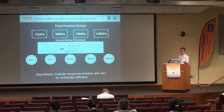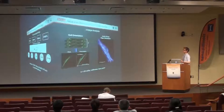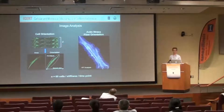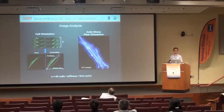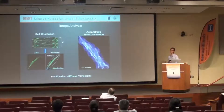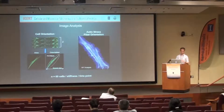The hypothesis is that cells are going to respond differently at different time points on different stiffnesses. For analysis, I fixed the cells and stained them with phalloidin to visualize their actin stress fibers, then looked at the cell orientation at the macro level and the orientation of the actin stress fibers intracellularly — so a macro to internal measurement of reorientation.